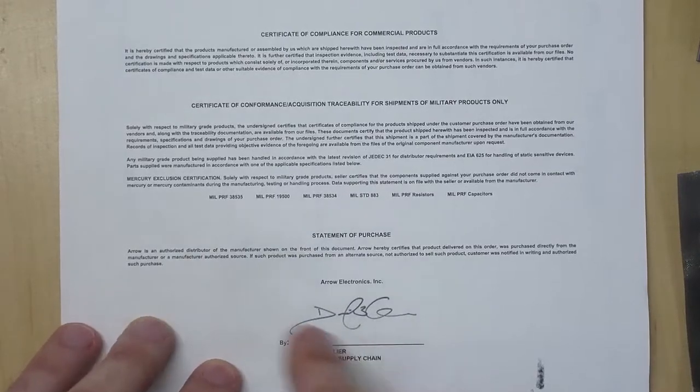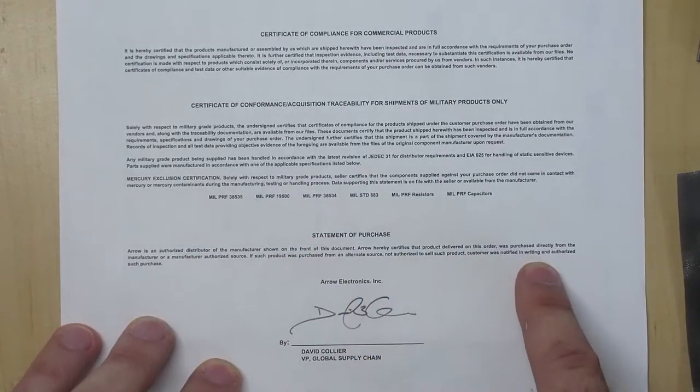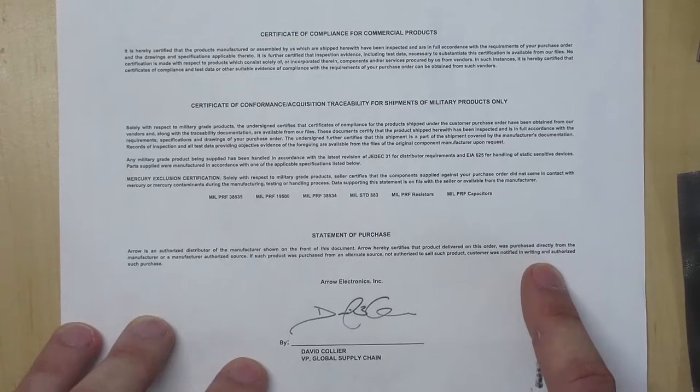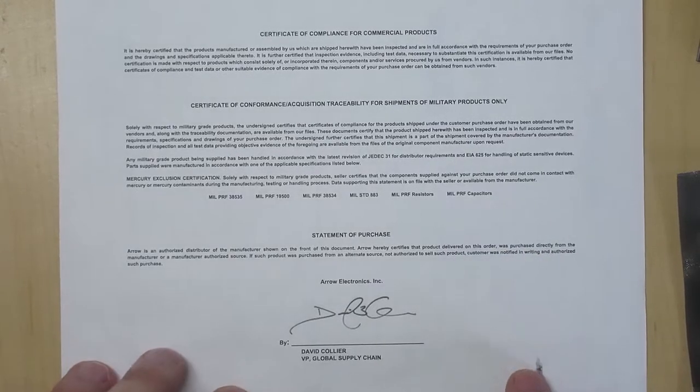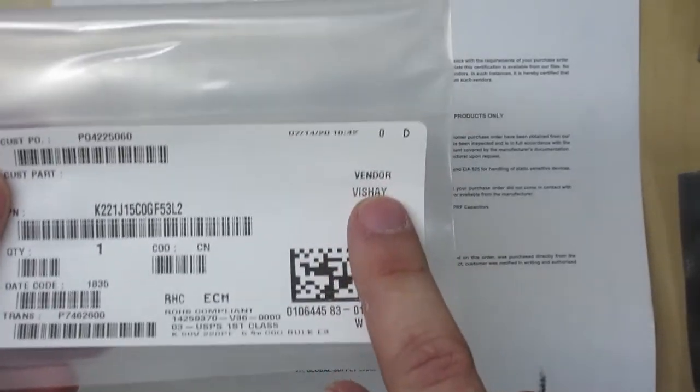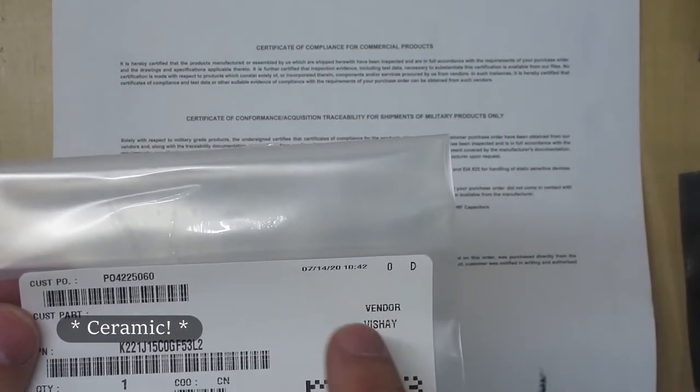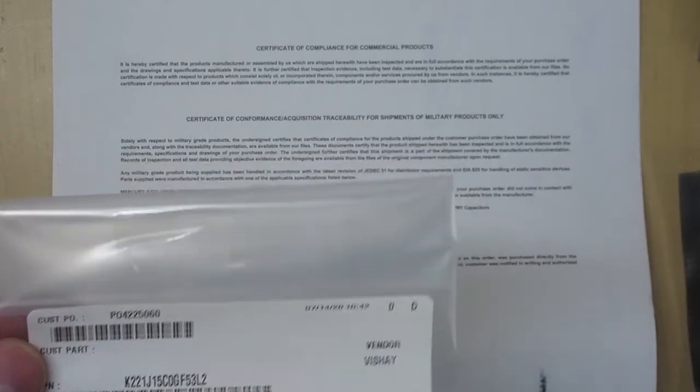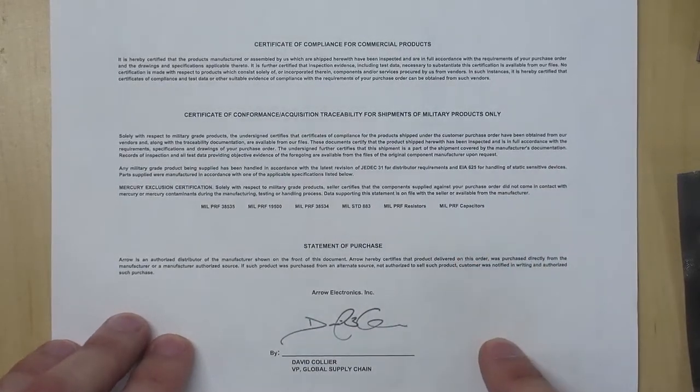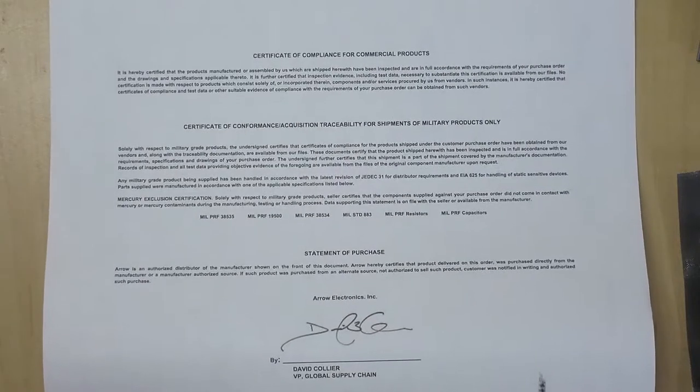And then finally, there's a statement here that says that the parts that I purchased are basically genuine and they come from the manufacturer that I requested. They've been checked to make sure. So like this guy, this is a Vishay film capacitor. This is not a counterfeit film capacitor by guarantee of Arrow Electronics. This part actually came from Vishay.